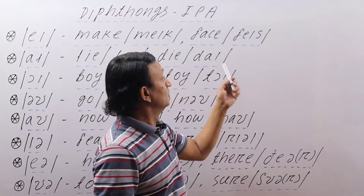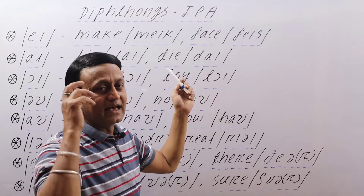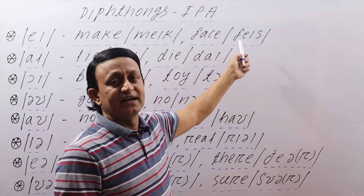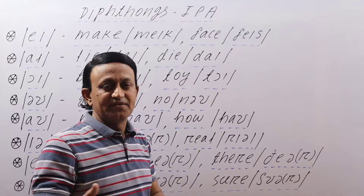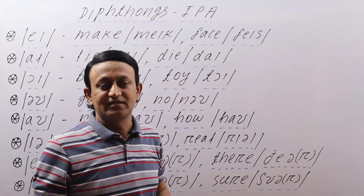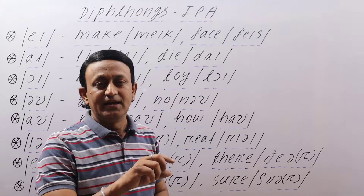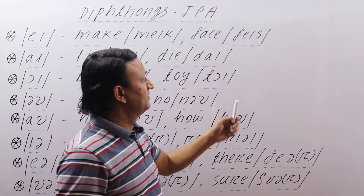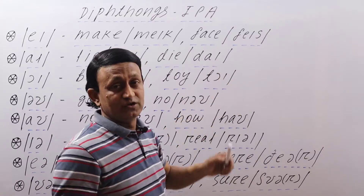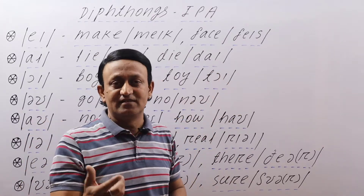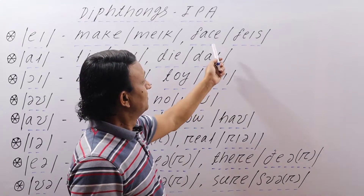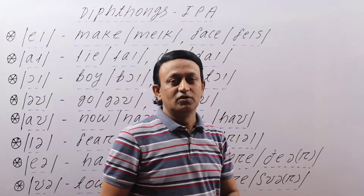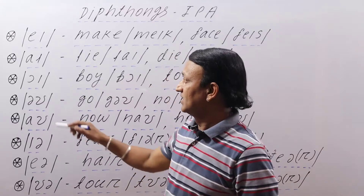Similarly, in the word 'face', you'll hear the same sound. F-A-C-E is the spelling, and this is the phonetic transcription. You can find the phonetic transcription in every dictionary — in front of the word the transcription is given, so you can easily find it. You just need to recognize and learn these symbols. So 'face' is written like this in transcription. The first diphthong sound is /eɪ/.